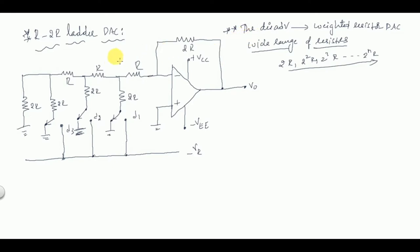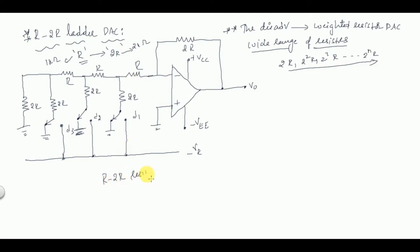To eradicate this disadvantage, in the R2R ladder DAC we use only two values of resistors: one value R and another value 2R, which is twice the first. So if you take R as 1 kilo ohm, you take 2R as 2 kilo ohm — that's all. With only two values, all resistors can be fabricated on a single IC chip. These R and 2R resistors are connected in the form of a ladder, which is why this DAC is called the R2R ladder type DAC.